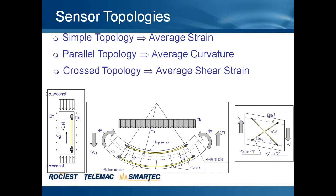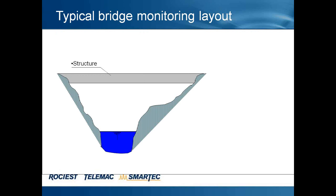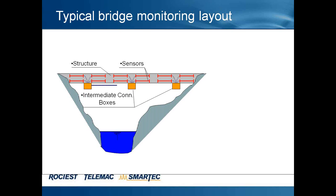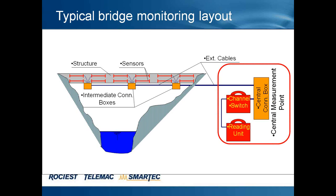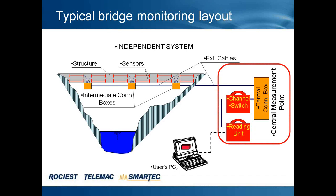A typical bridge monitoring layout consists of a couple of parallel sensors installed on the deck of the bridge. These parallel strain or deformation sensors are connected by a passive part to intermediate connection boxes. These boxes are linked through extension cables — multi-fiber cables — to a central measurement box, or central measurement point, where there are the reading unit and the channel switch. This central measurement point is an independent system connected to a user PC in the office by wire or wireless connection.